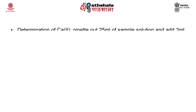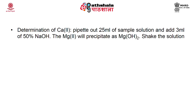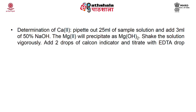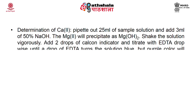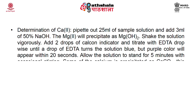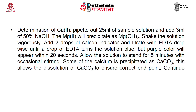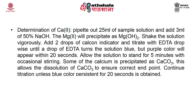Determination of calcium only: pipette out 25 ml of sample solution. Add 3 ml of 50% NaOH — magnesium will be precipitated as magnesium hydroxide. Shake the solution vigorously. Add 2 drops of calcone indicator and titrate with EDTA dropwise until a drop of EDTA turns the solution blue, though a purple color will appear within 20 seconds. Allow the solution to stand for 5 minutes with occasional stirring, as some calcium may precipitate as calcium carbonate, and this allows its dissolution to ensure the correct end point.